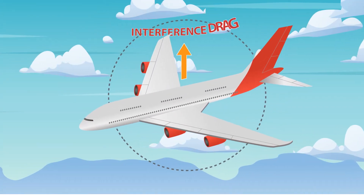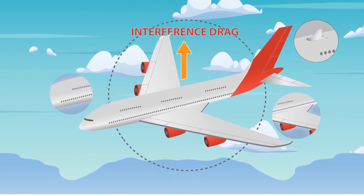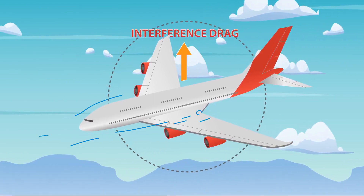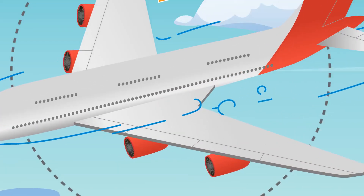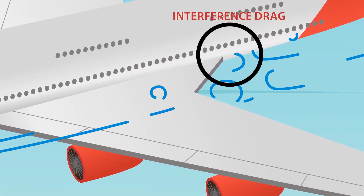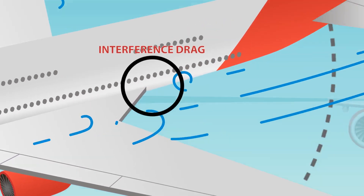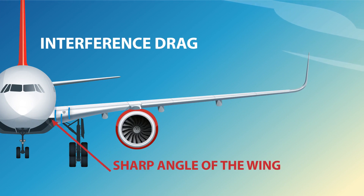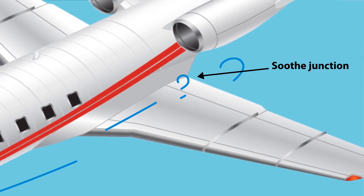Because most aircraft are constructed from multiple components — like the fuselage, wings, antennas, and so on — these components must be assembled. Each component must forge its own way through the air, and each creates its own airstream. When these airstreams intersect, turbulence and eddy currents can form, creating interference drag. The more abrupt the junction between two components, the greater the interference drag. The smoother the junction, the less interference drag is created.